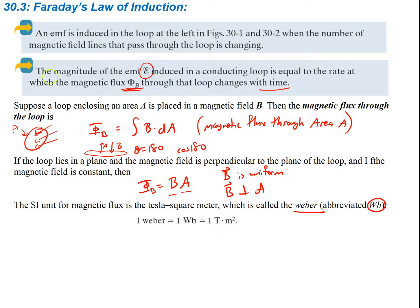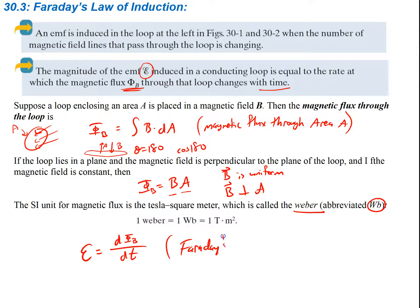The magnitude of the EMF induced in a conducting loop equals the rate at which the magnetic flux through that loop changes with time. We can write that as an equation — that's Faraday's Law: EMF = -dΦ_B/dt.